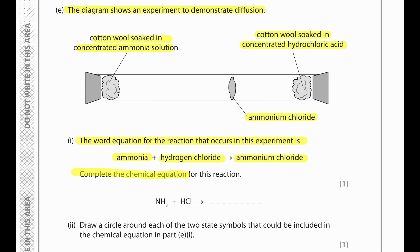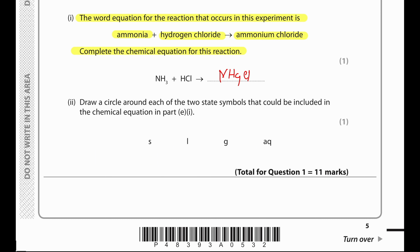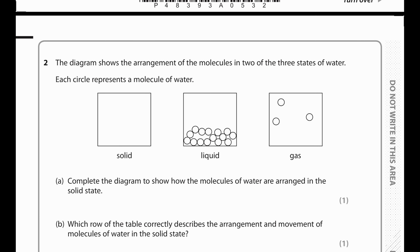Write the chemical equation for this reaction. Ammonium chloride has a formula of NH4Cl. Draw a circle around each of the two state symbols that could be included in the chemical equation. Because ammonium chloride is a solid, we circle S; and ammonia and HCl are gases, so we circle G.